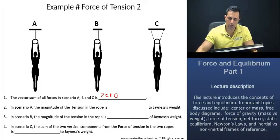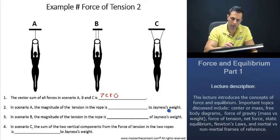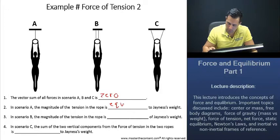Now, how about the second question? In Scenario A, the magnitude of the tension in the rope is going to be what to Janus' weight? Well, that's just going to be equal to Janus' weight.